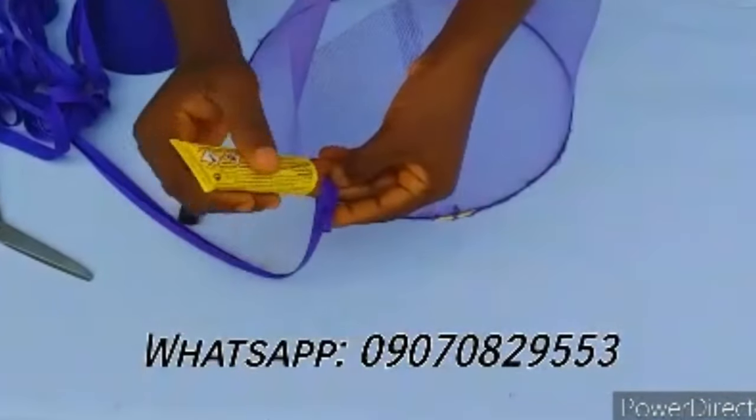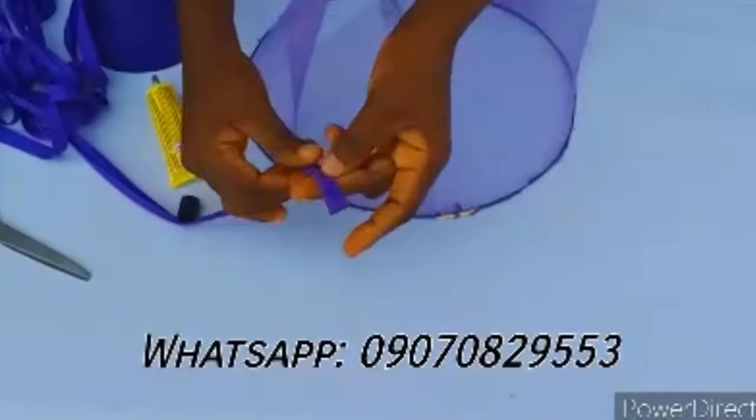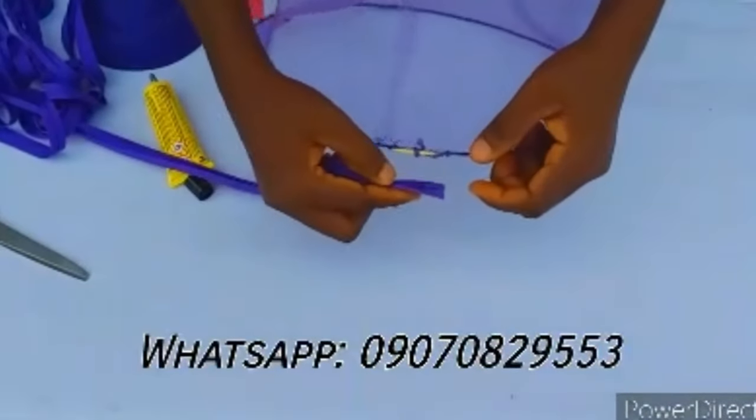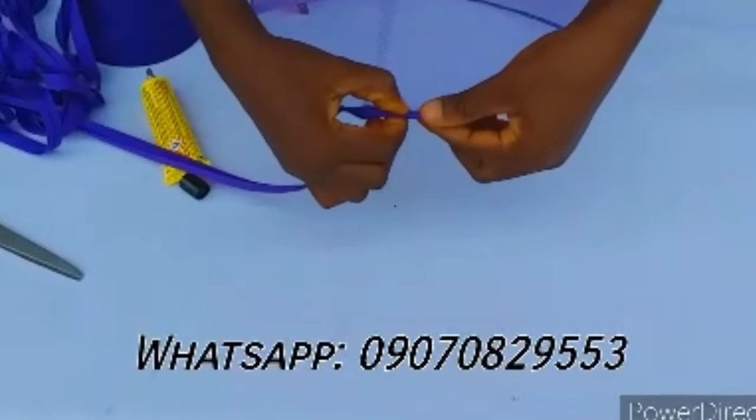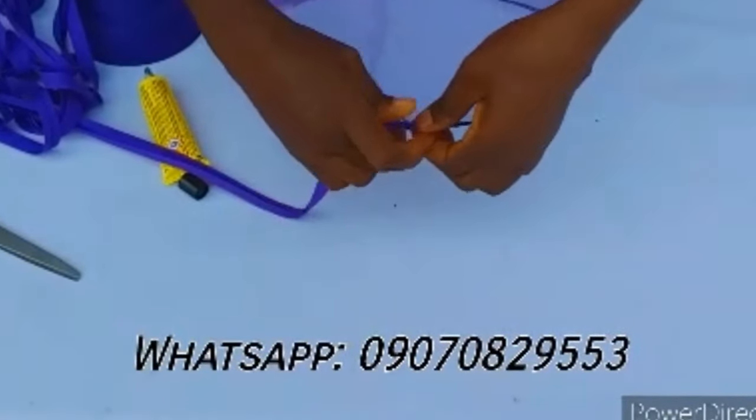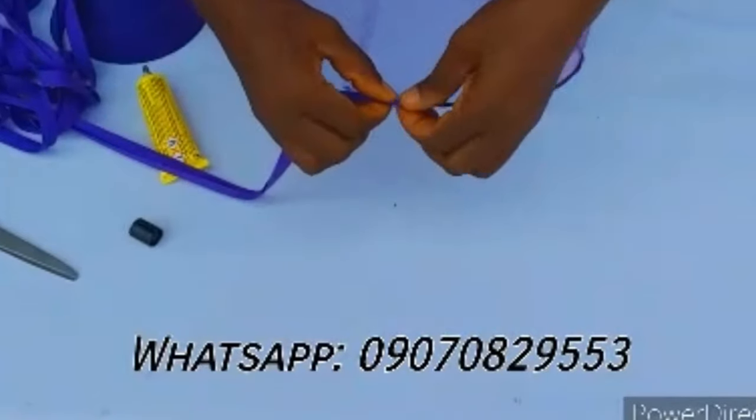Now with my bias strip and my UHU glue, I'm going to cover the wire. As you can see, I'm just going to use my bias strip, apply glue on it, and use it to cover the wire round like that.